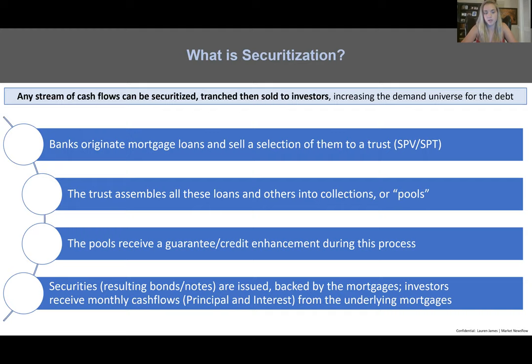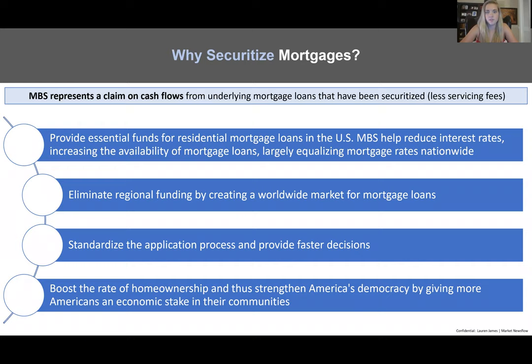In addition, the resulting securities — bonds and notes — are issued and backed by the mortgages, and investors receive monthly cash flows, both principal and interest, from the underlying mortgages. We'll get to this in later lectures, but monthly cash flows can be principal only and interest only as well, which create PO and IO strips respectively.